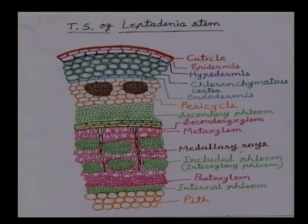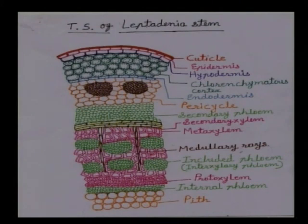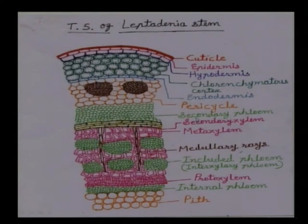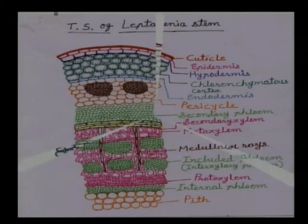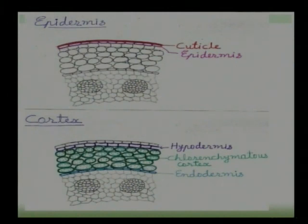This is the transverse section of the Leptadania stem. The outermost layer is known as epidermis. Then after is hypodermis, then chlorenchymatous cortex, endodermis, pericycle, secondary phloem, secondary xylem, medullary ray, included phloem, proto xylem, internal phloem, and the last layer of the stem is pith. The outermost layer is known as epidermis.